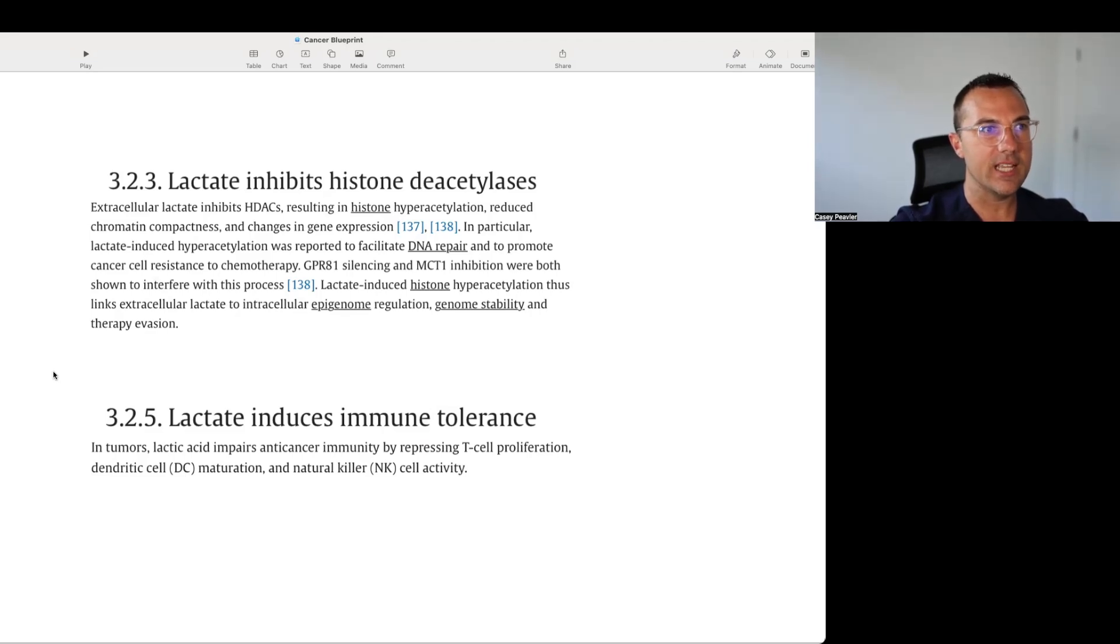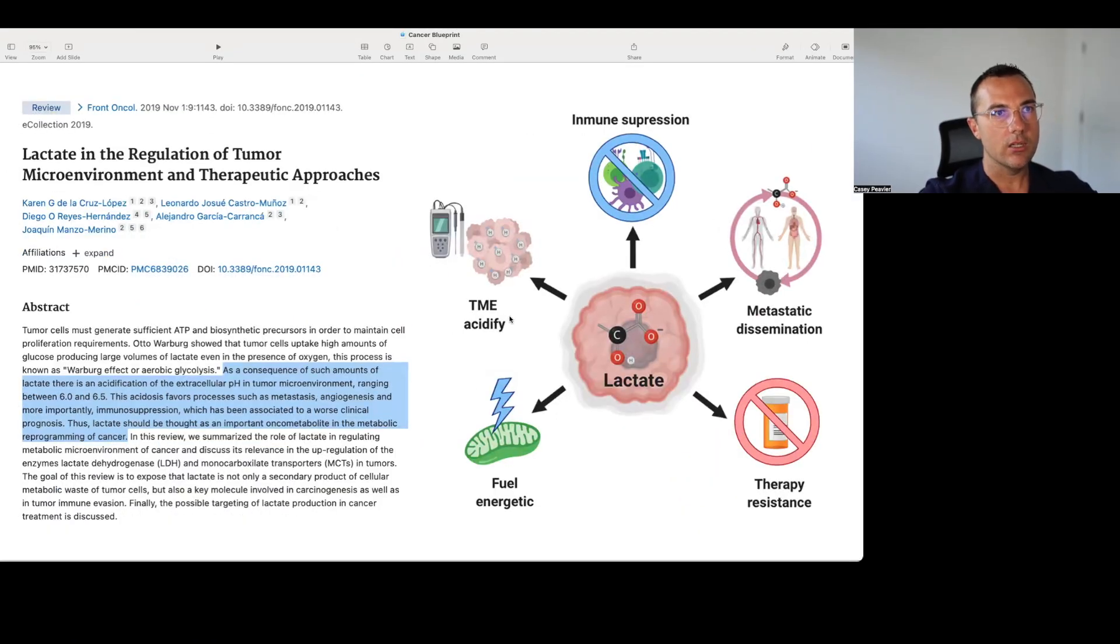And lastly, lactate induces immune tolerance. In tumors, lactic acid impairs anti-cancer immunity by repressing T-cell proliferation, dendritic cell maturation, and natural killer cell activity. Again, that is basically showing at least many of the reasons why lactic acid and succinic acid and this tumor microenvironment that is quite acidic at 6 to 6.5 pH is a big problem for us, which is going to lead nicely into why lactate dehydrogenase could be an important therapeutic target for enhancement of ketogenic metabolic therapy. If you like videos like this, please like, share, and subscribe. Until next time.